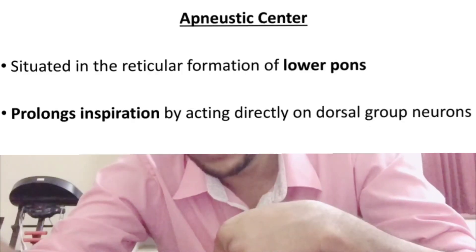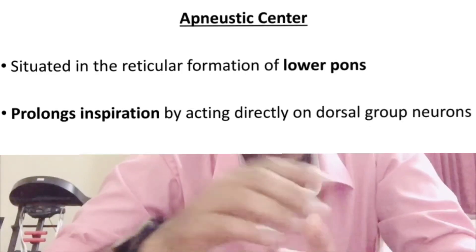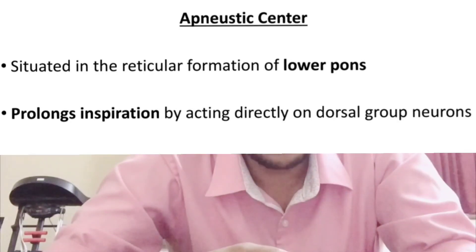The apneustic center in the lower pons prolongs inspiration by activating the dorsal respiratory group of neurons. Its second function is to increase the depth of inspiration.